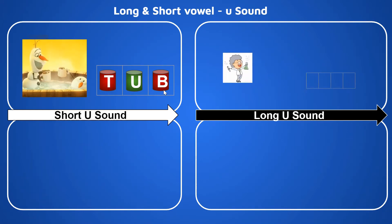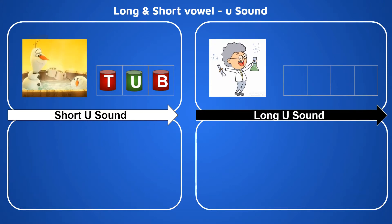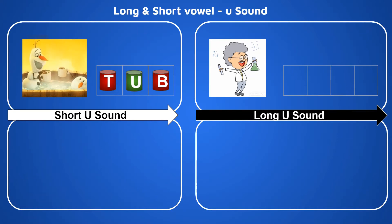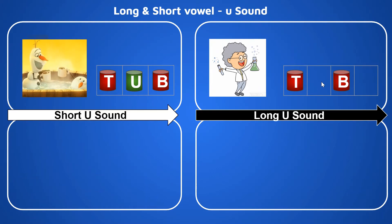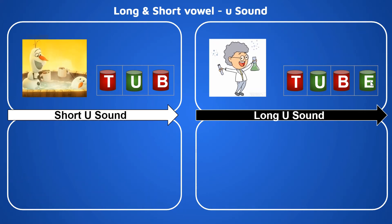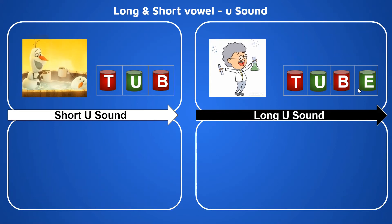Now let's try an example of the long sound of U. What is the scientist holding in his hand? It is a tube. What is the beginning sound of 'tube'? That is T. What is the ending sound of 'tube'? That is B. What is the middle sound? T, 'U', B — the middle sound is long U. Who has come along with U? That is alphabet E. Whenever you have the long sound of U, E will come as a friend. So: T, U, B, E — tube.